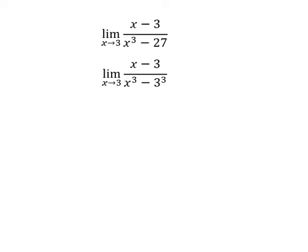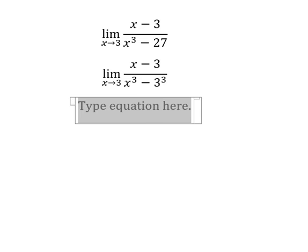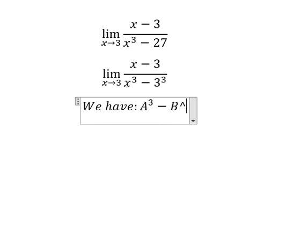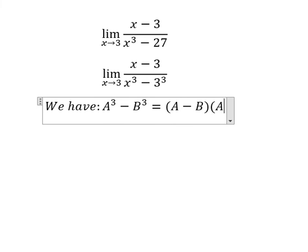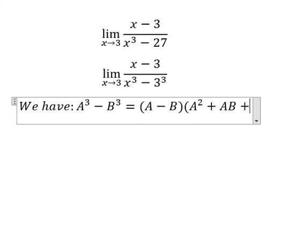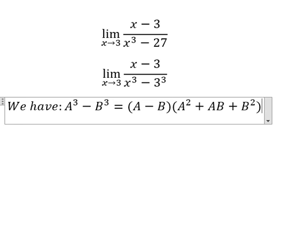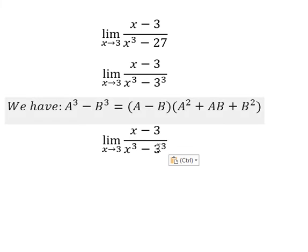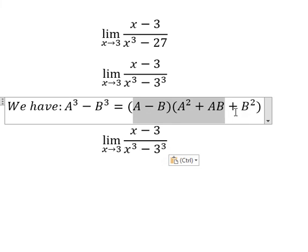Now we have the formula: A to the power of 3 minus B to the power of 3 equals A minus B multiplied by A squared plus AB plus B squared. And now we need to transform into this form.